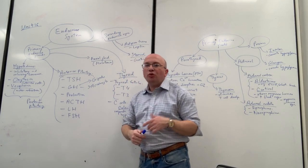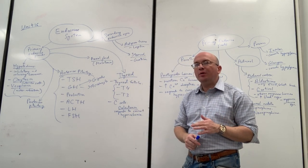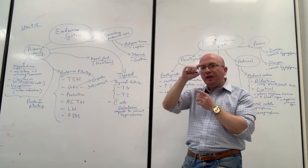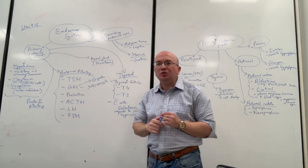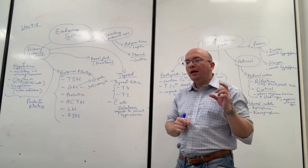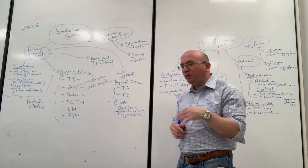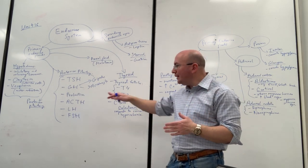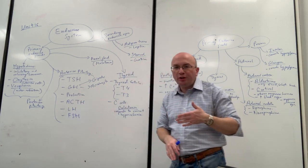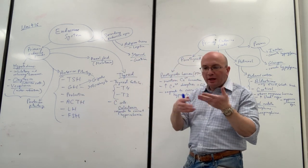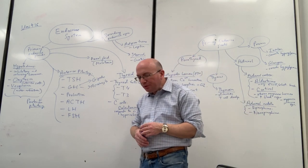For ACTH — adrenocorticotropic hormone — we are talking about the adrenal gland, which are the triangle-shaped structures on top of the kidneys that we saw in class. In order to tell the adrenal gland what to do and when to start functioning, ACTH must be released, and it goes to the adrenal gland to activate that organ appropriately.